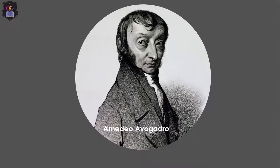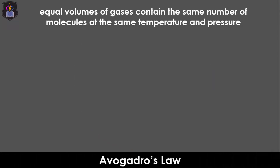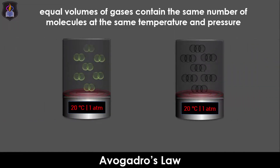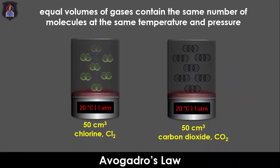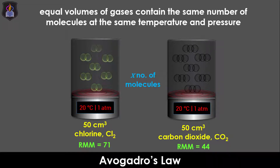Avogadro's law, on the other hand, states that equal volumes of gases contain the same number of molecules at the same temperature and pressure. This implies that equal volumes of, say, chlorine and carbon dioxide at the same temperature and pressure will contain the same number of molecules, irrespective of their molecular masses.